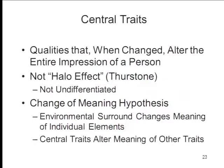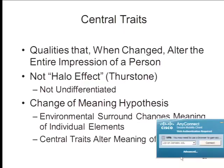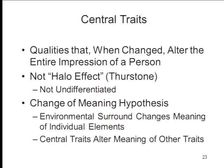On the basis of these experiments, Asch argued that impression formation was dominated by what he called central traits. A central trait is a quality that, when changed, alters the entire impression of the person. Describing somebody as warm or cold really makes a big difference. Asch was a gestalt psychologist — the whole is greater than the sum of its parts. What Asch argued was that when you slip a word like warm or cold into a description, that single word changes the meaning of all the other words. This is known as the change of meaning hypothesis: the environmental surround changes the meaning of the individual elements, and central traits alter the meaning of other traits.